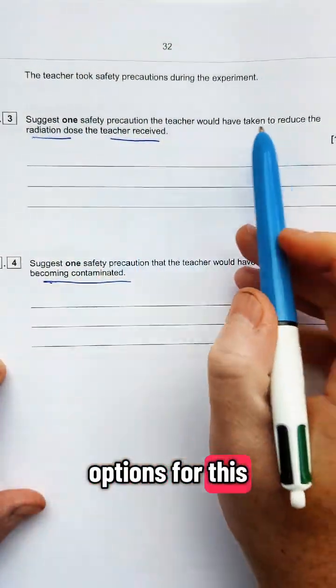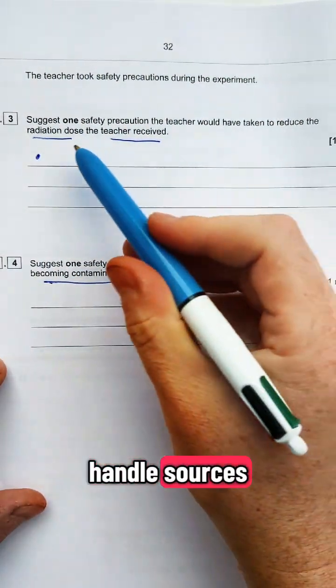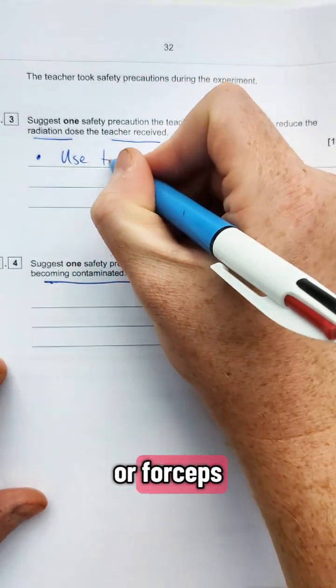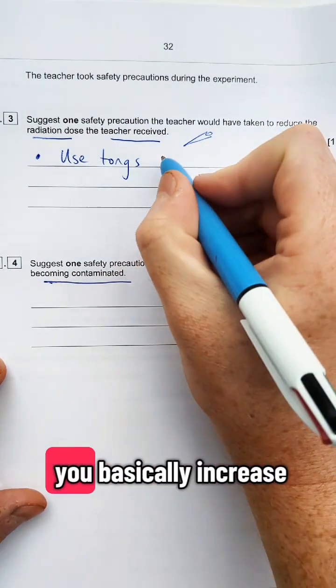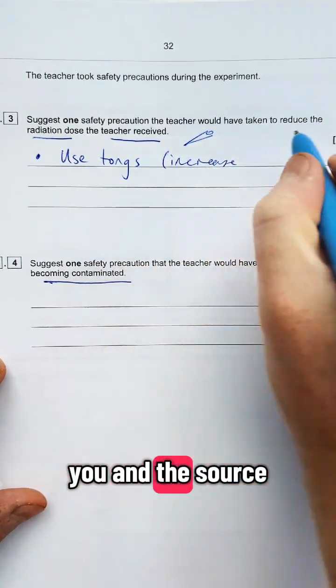So there are a few different options for this. If you think about how to handle sources, the easiest one to put is to use tongs or forceps. Those are like sort of tweezer things where you keep the source. You basically increase the distance between you and the source.